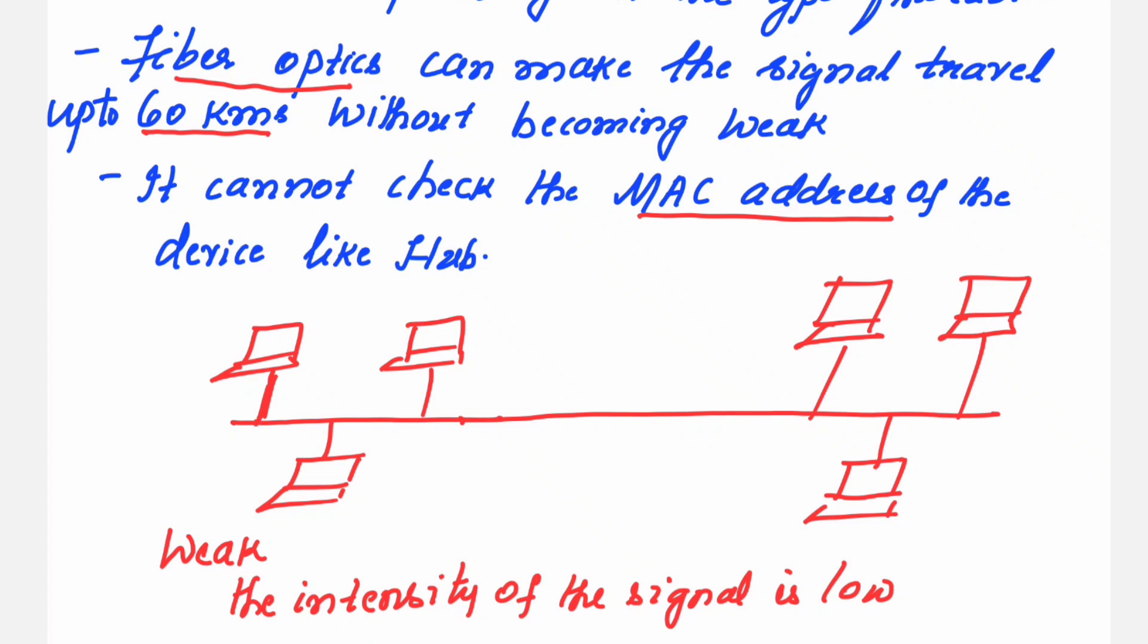So, in order to increase the intensity of the signal, we can place a device. Suppose the signal starts with a very high intensity, but as it travels over the distance, it starts becoming very low. This signal becomes very low as it travels over this particular transmission medium.